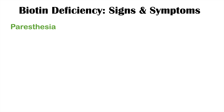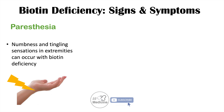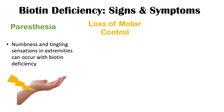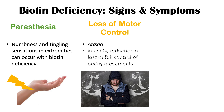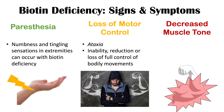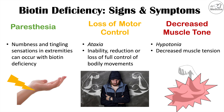Later signs of biotin deficiency include paresthesias — numbness and tingling sensations that often occur in the extremities, such as the hands and feet. There can also be loss of motor control, known as ataxia, which is a reduction or loss of full control of bodily movements. Additionally, there can be decreased muscle tone, or hypotonia, where the muscles become floppy on physical examination. These findings occur with later or long-lasting deficiencies.